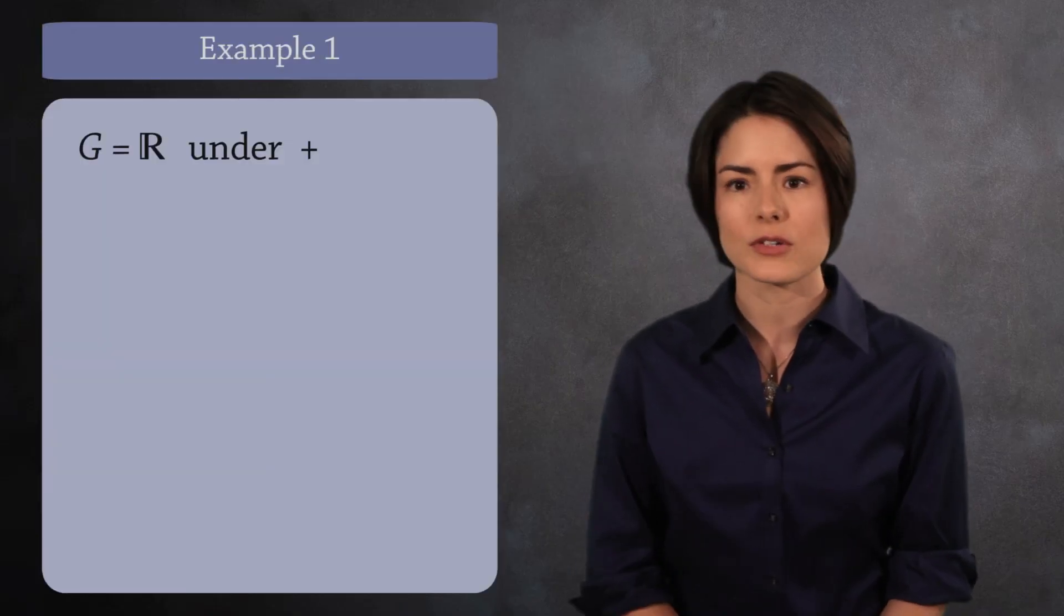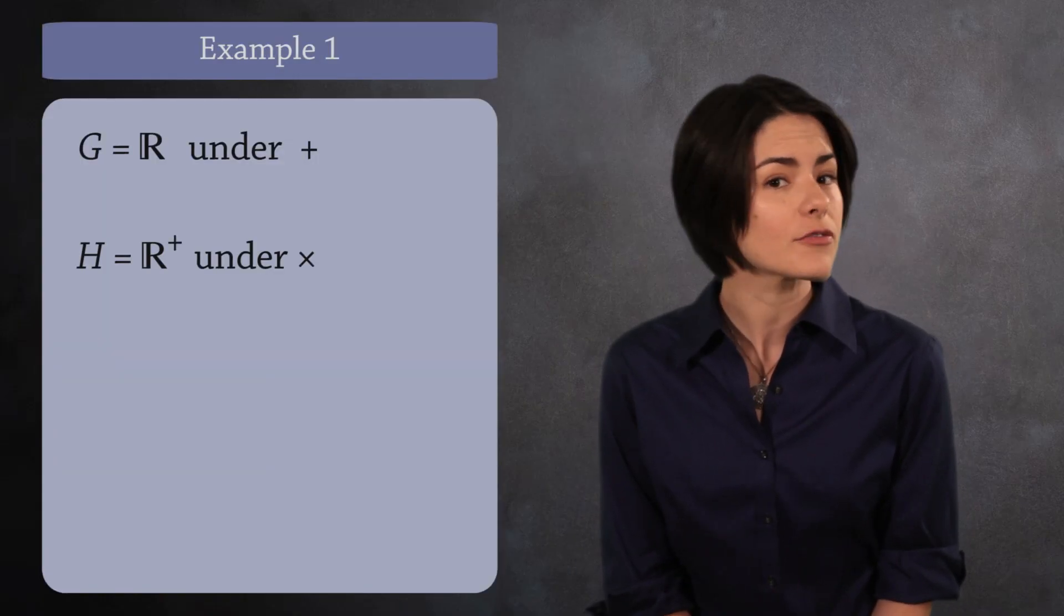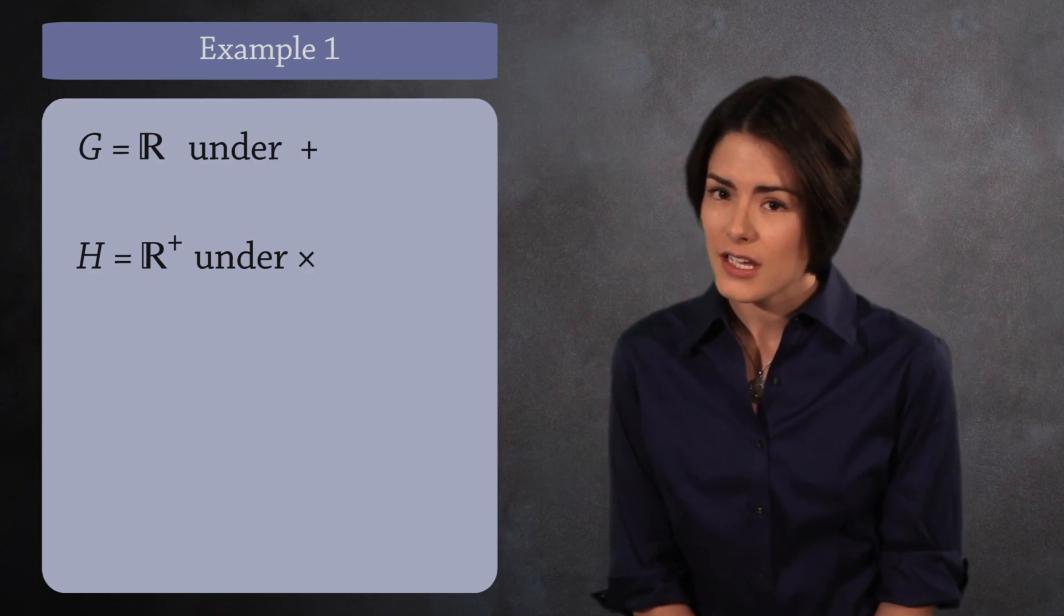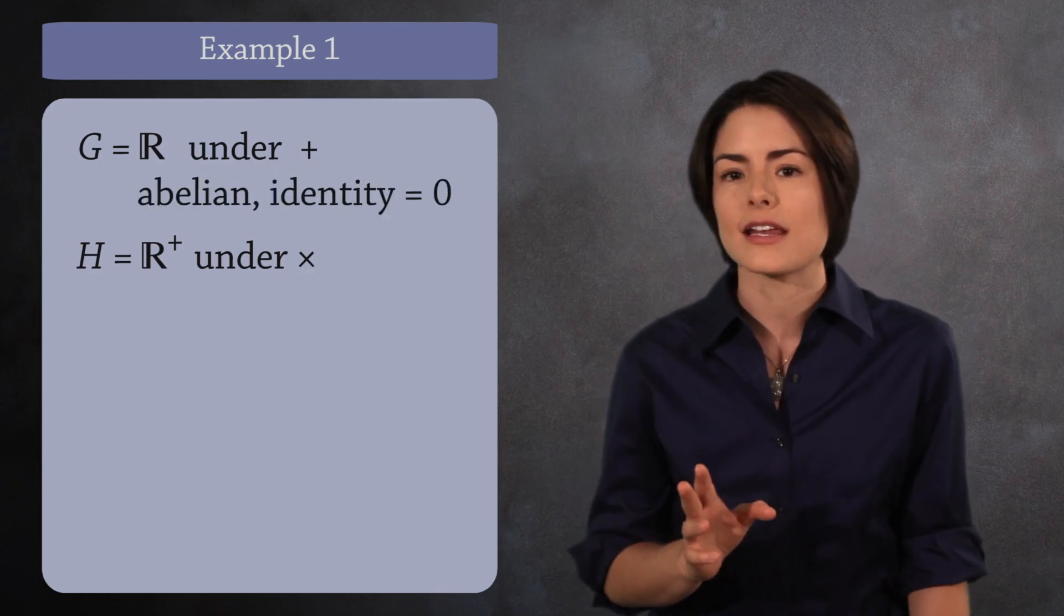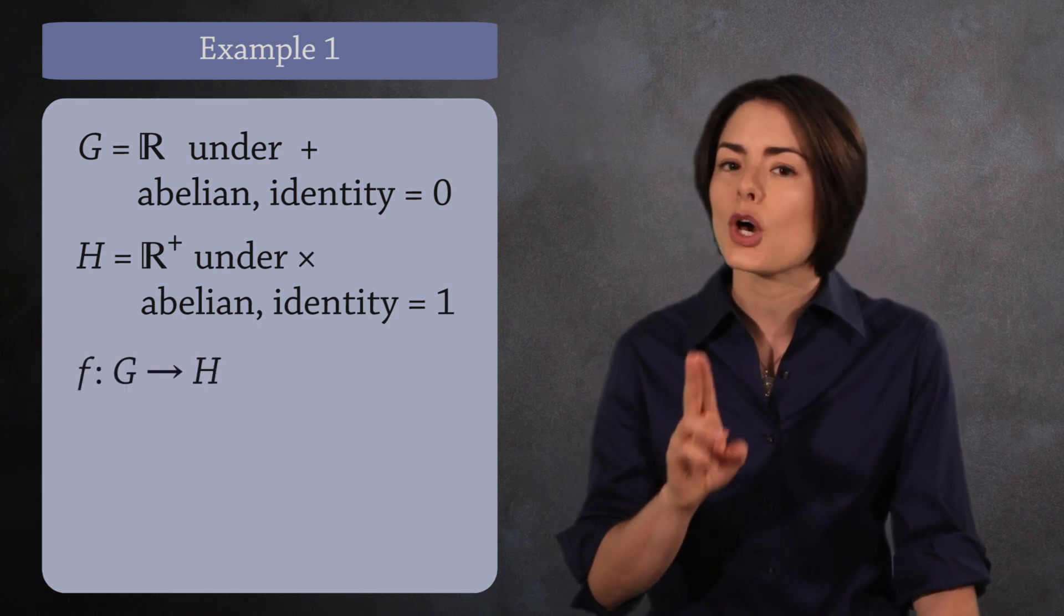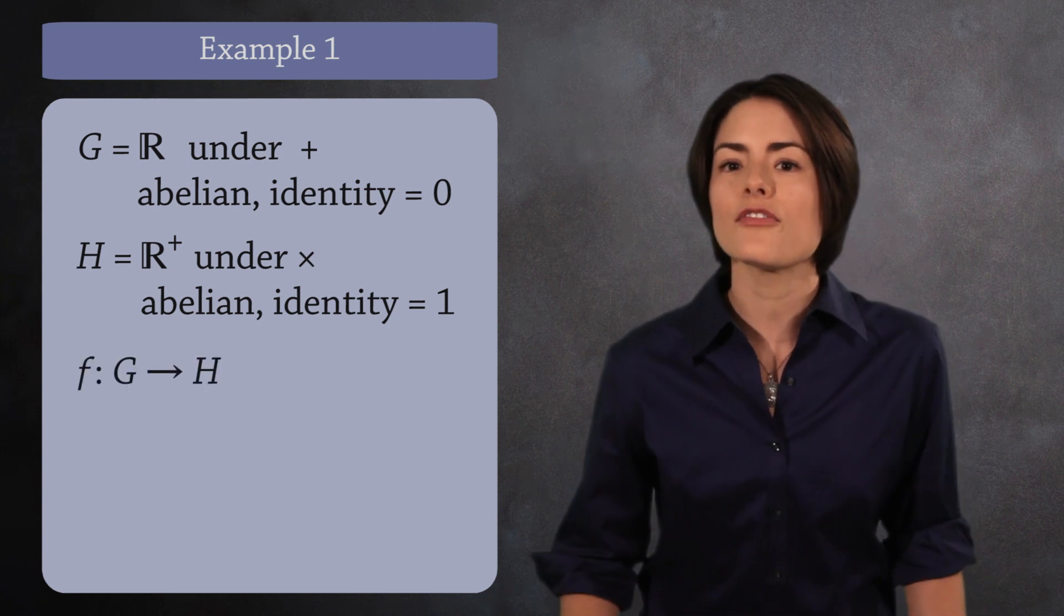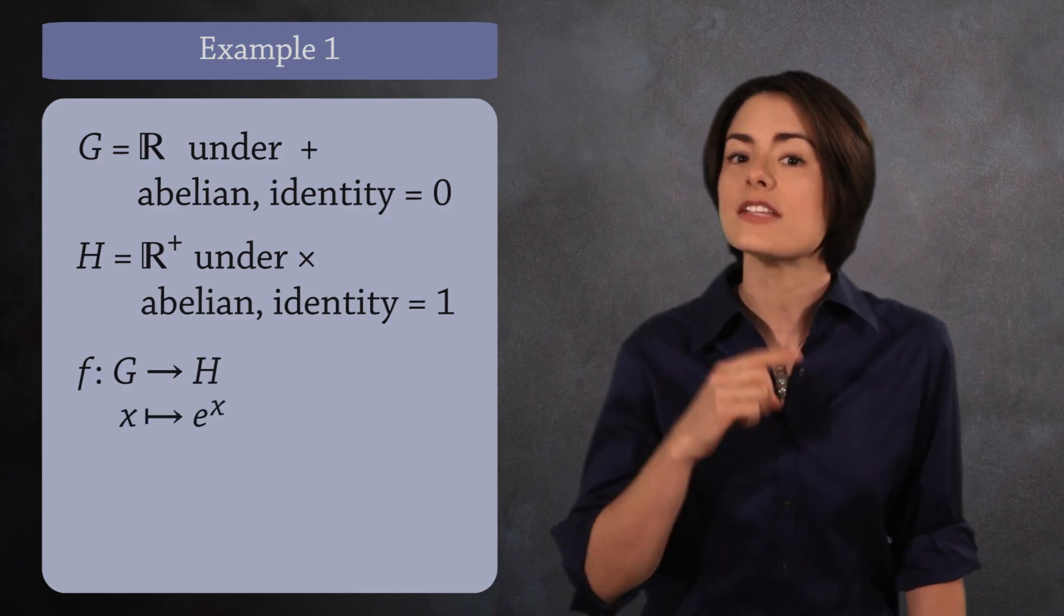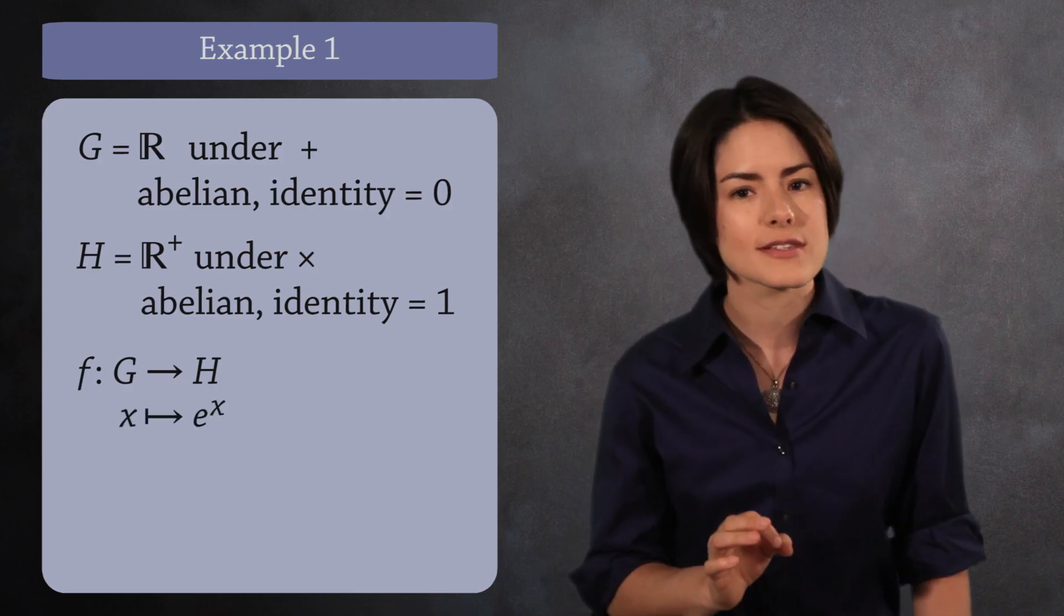Let's see an example. Let G be the group of real numbers under addition, and H be the positive real numbers under multiplication. G is an abelian group with identity element 0, and H is an abelian group with identity element 1. Here's a homomorphism. Define the function f that maps x to e to the x. To make sure this is a homomorphism,